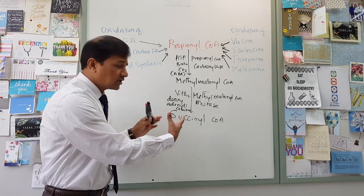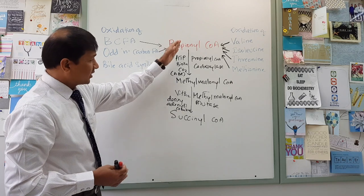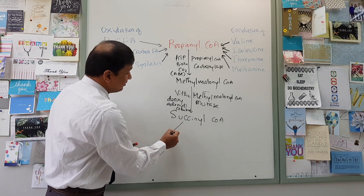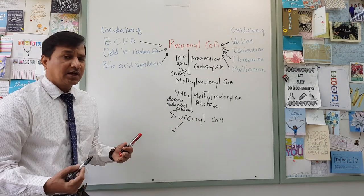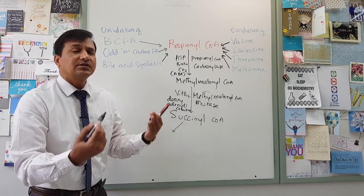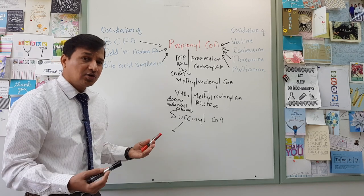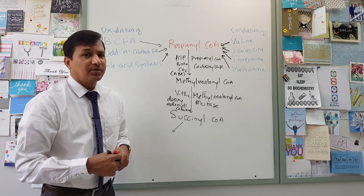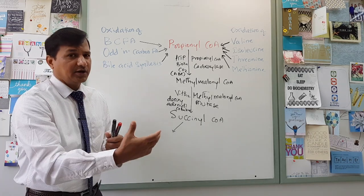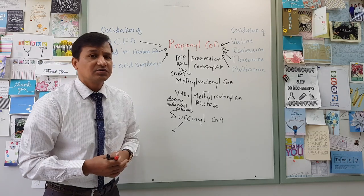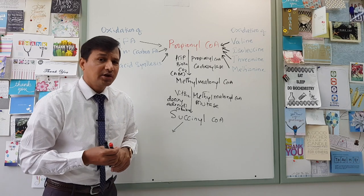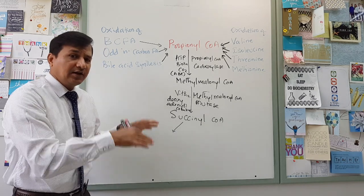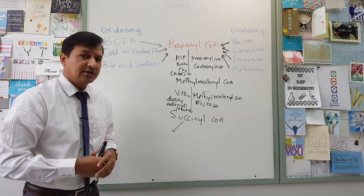Once you get succinyl-CoA, it is a TCA cycle intermediate. All these reactions are going on in the mitochondrial matrix. Succinyl-CoA can be converted into succinate, then fumarate, then malate. If the cell needs glucose — for example, if the person is in a fasting condition — malate will move out of the mitochondria into the cytoplasm, be converted into oxaloacetate, and that will go into glucose formation via gluconeogenesis.